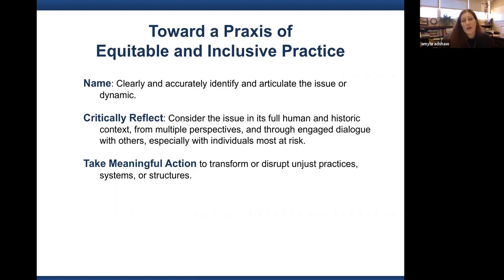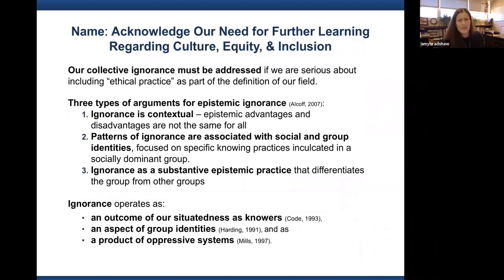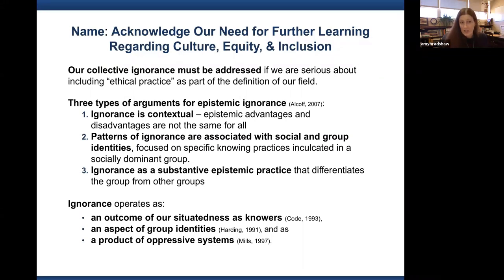Practice is the key I see for working toward equitable and inclusive practice. The naming process: the chapter goes into more detail on epistemological ignorance — that ignorance is contextual, that different patterns of ignorance are associated with different social and group identities. If we think about our fields, institutions, or companies, ignorance as a substantive epistemic practice differentiates the group from other groups.